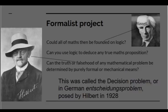Then, with the start of the 20th century, you got the formalist project in mathematics. You had the mathematician and philosopher Bertrand Russell asking whether all of maths could be founded on logic. Could you use logic to deduce any true proposition in maths? More generally, can the truth or falsehood of any mathematical problem be determined by purely formal or mechanical means by applying symbol substitution in the procedures of formal logic? This was called the decision problem, or in German the Entscheidungsproblem, and was proposed by the famous mathematician Hilbert in 1928.